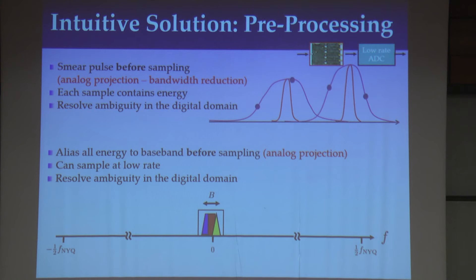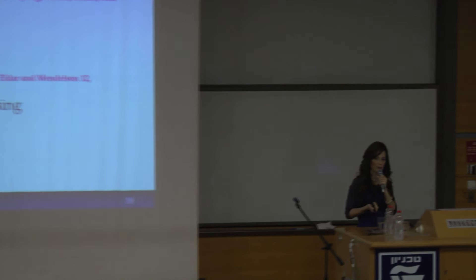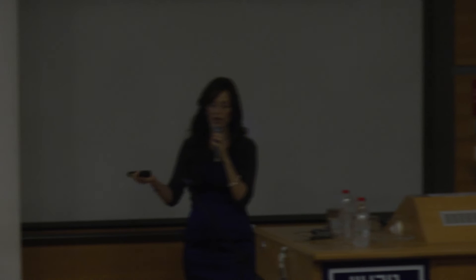What are these digital means? On the high level, you could think about this just as subspace recovery. We had many subspaces, we're viewing a sum of all of these subspaces, and now we have to identify the correct one. This is kind of a standard problem in array processing, so we could use array processing techniques to recover the subspace. The more modern way of viewing these problems is within the theory of compressed sensing, and there's actually a nice analogy between compressed sensing and subspace methods — different ways of attacking the same problem. What's also nice is that we could extend these ideas to nonlinear sampling, which will be important in the context of optics, and therefore compressed sensing could be extended to deal with nonlinearities.